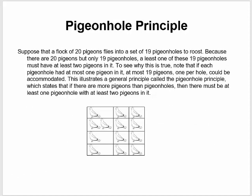Let's talk about the pigeonhole principle. Suppose a flock of 20 pigeons flies into a set of 19 pigeonholes to roost. Because there are 20 pigeons but only 19 pigeonholes, at least one of those 19 pigeonholes must have at least two pigeons — there's no other way for 20 pigeons to fit into 19 holes. This illustrates the pigeonhole principle: if there are more pigeons than pigeonholes, there must be at least one pigeonhole with at least two pigeons. If there are more objects than places to put them, at least one place must contain at least two objects.